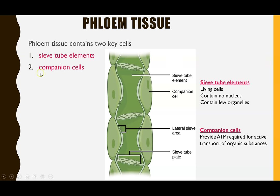In this diagram, in the middle are the sieve tube elements — cells all lined up together — and on either side we have the companion cells. The end walls of sieve tube elements are perforated, with holes that allow a continuous flow of sugar solution. They are living cells but don't contain a nucleus and have very few organelles, much like xylem, giving a hollower tube to ensure maximum flow of the sugary solution.